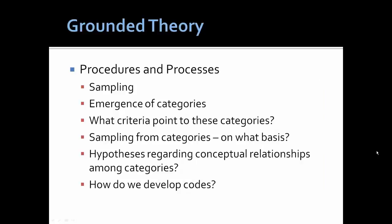In grounded theory, the sampling begins with an observation, but then the researcher selects based on theories or hypotheses about the observations. As concepts and categories emerge, these inform future observations or future sampling. What are the criteria for these categories? How do we sample future behaviors that expand on the behavioral examples and concepts under the umbrella of the category? What conditions might give rise to an increase or decrease in behaviors and concepts in the category? And most importantly, how do we develop codes for present and for future use?